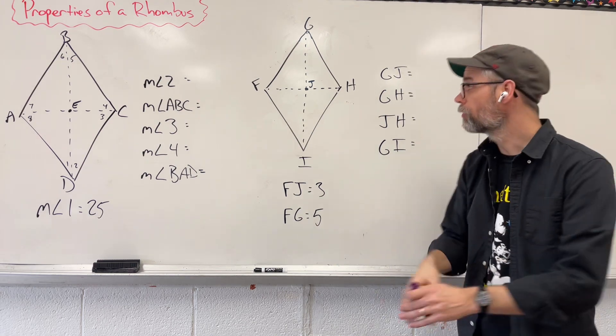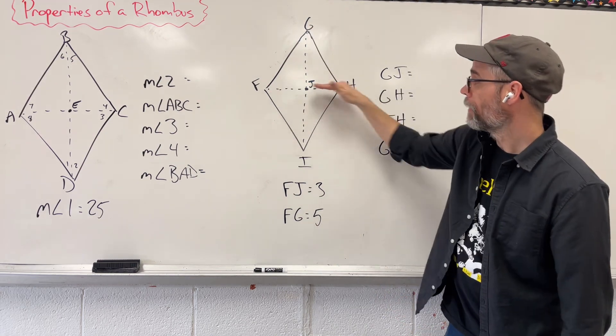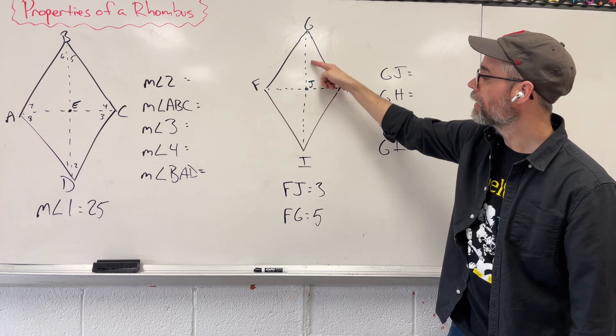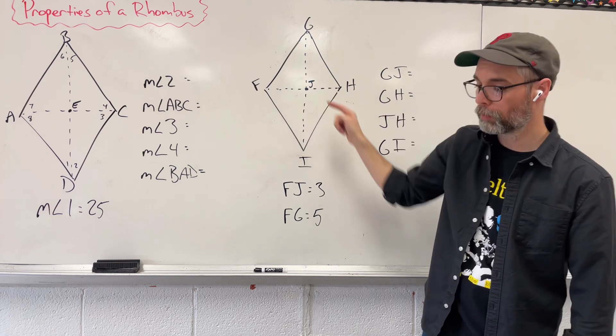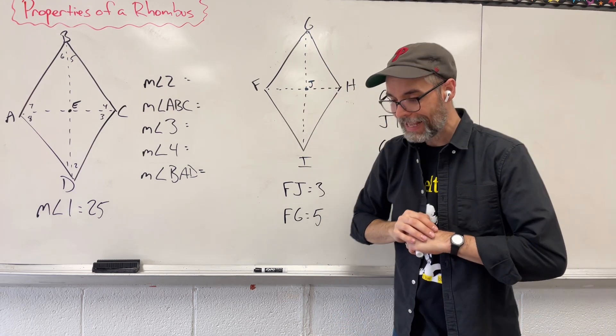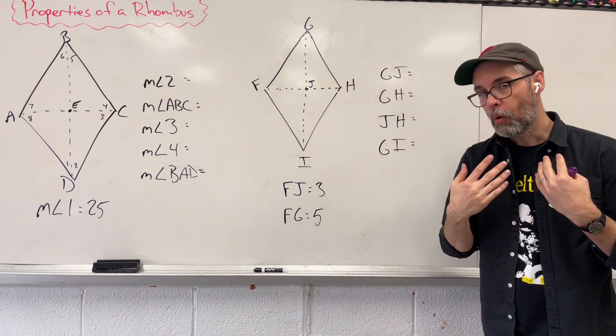We have diagonals that when they cross each other, they bisect into two equal parts. And now, what else happens?